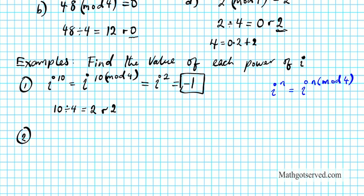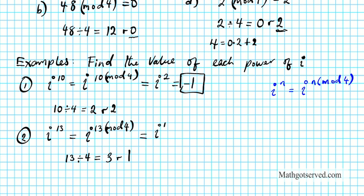Example 2: What is the value of i to the 13th? Using the formula, we need 13 modulo 4, which is the remainder after 13 is divided by 4. 4 goes into 13 three times, which is 12, remainder 1. So i to the 13th modulo 4 is i to the 1st power, because 13 mod 4 is 1. From our chart, i to the 1st power is simply i. So i to the 13th equals i.